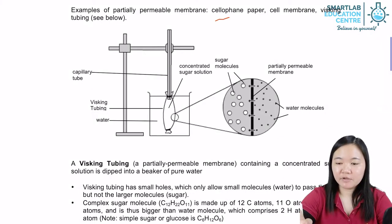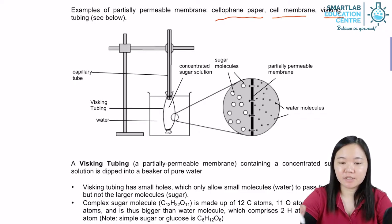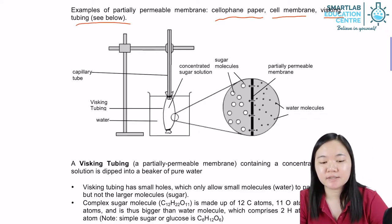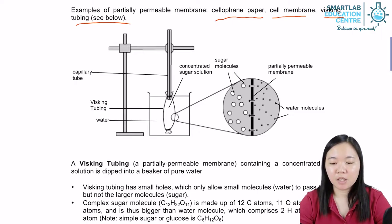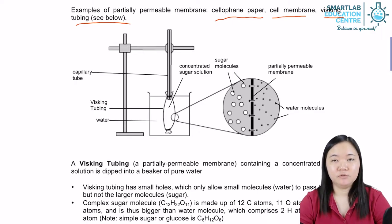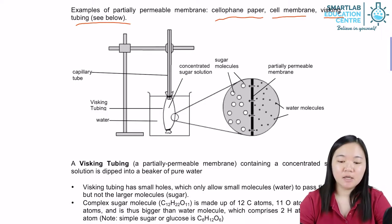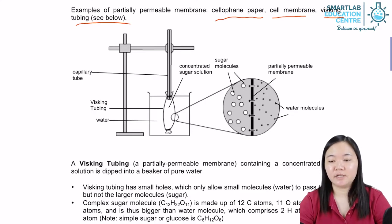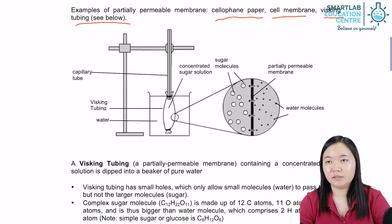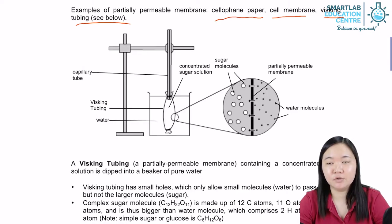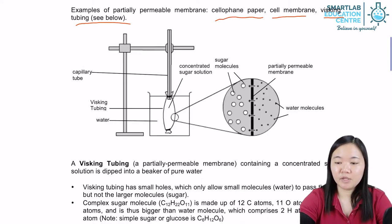Number one: cellophane paper. Number two: cell membrane. Number three: visking tubing. These three examples you need to remember, because in some exam questions they won't tell you it's a partially permeable membrane — they'll tell you that the membrane is cellophane paper, cell membrane, or visking tubing.